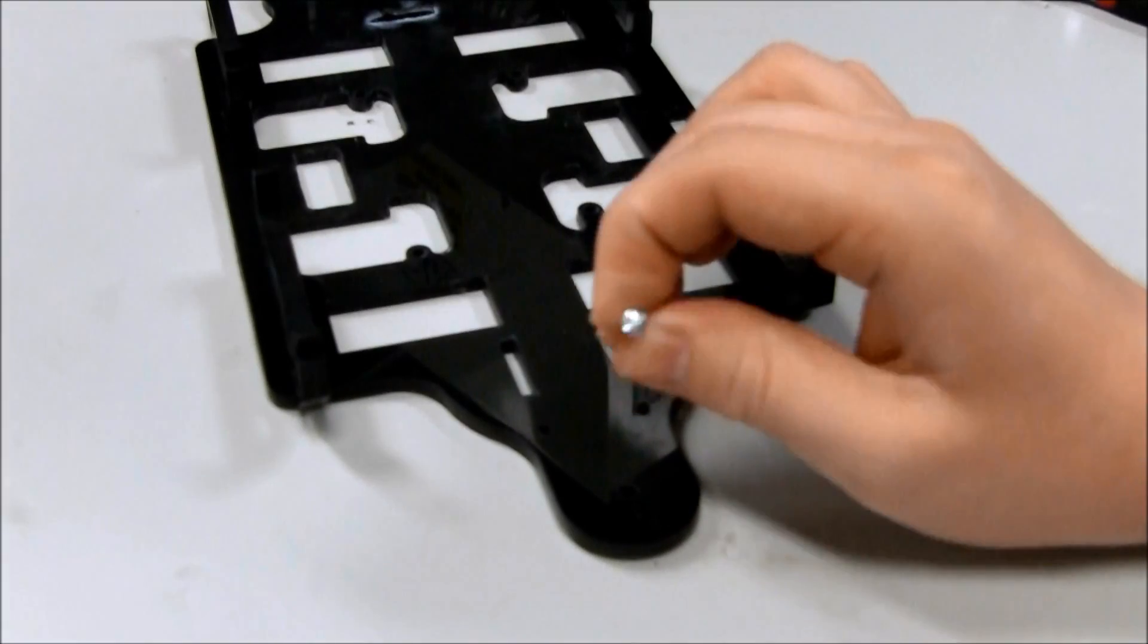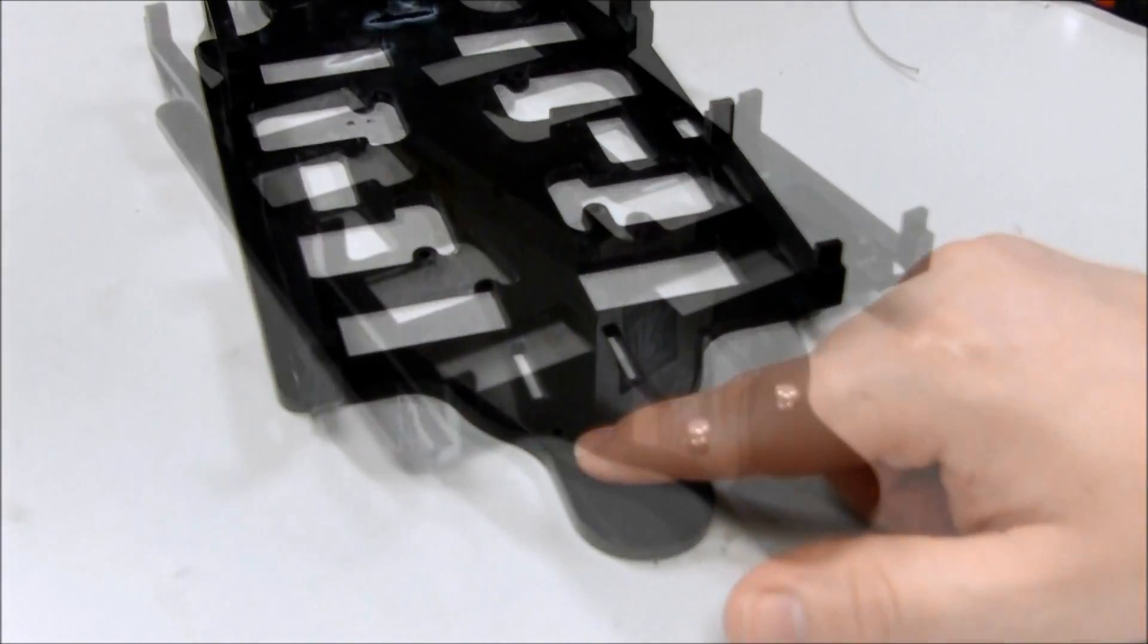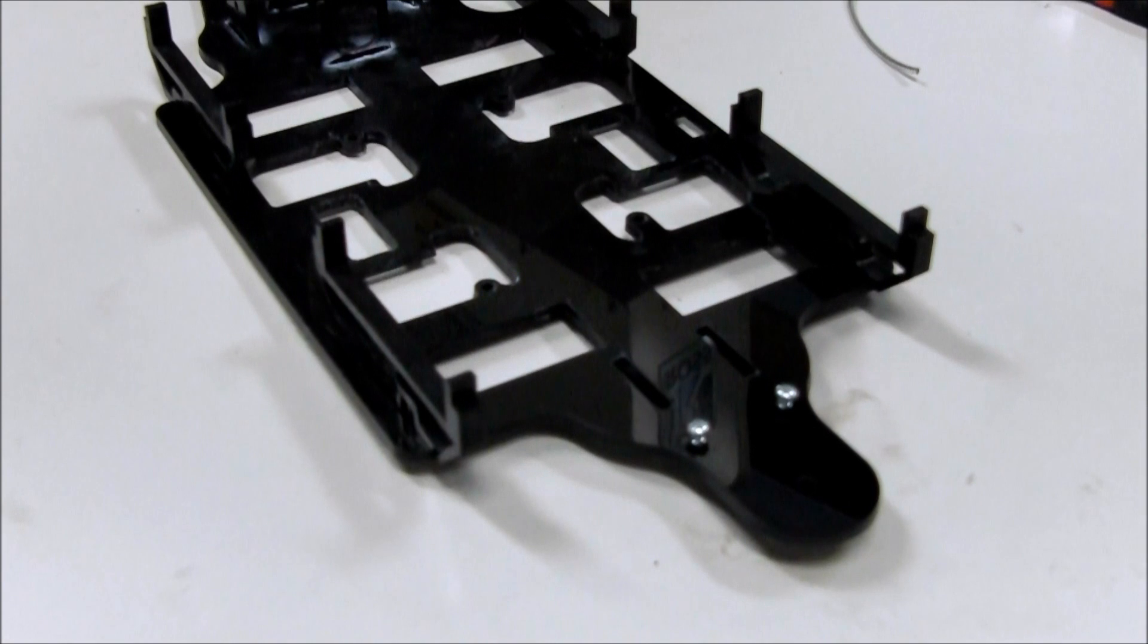Screw one steel sheet metal screw into each of the two adjacent holes near the end of the tail section of the body. Leave an eighth inch clearance from being flush with the body to allow for cord attachment.